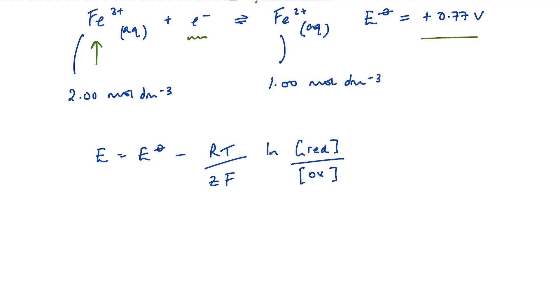The reduced species in this case is the Fe2 plus. And the oxidized is the Fe3 plus.